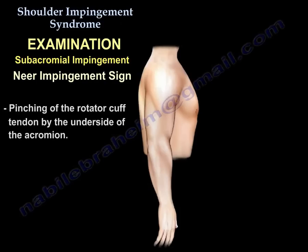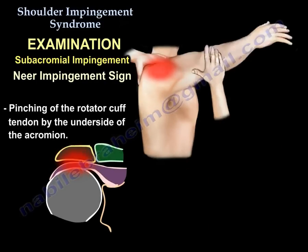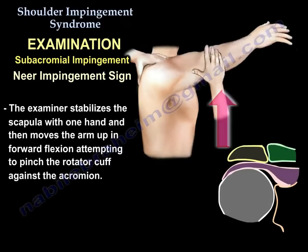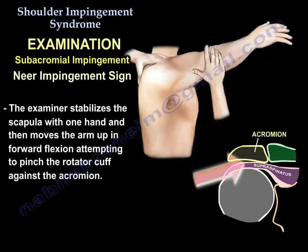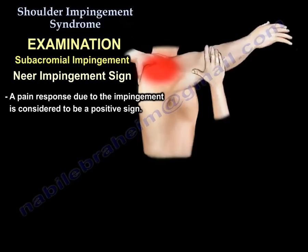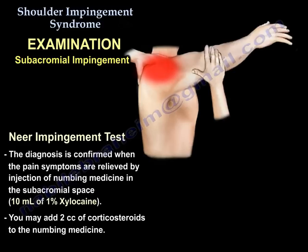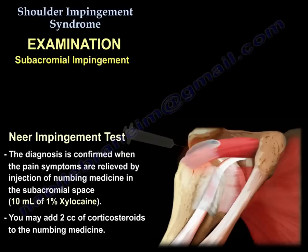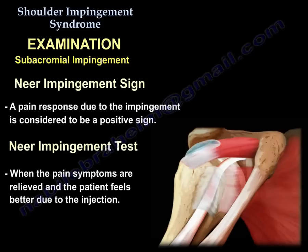The first test is the Neer impingement test. In that test, you pinch the cuff by the undersurface of the acromion. You stabilize the patient's scapula and take the arm straight in forward flexion all the way up to see if you can pinch the tendons against the acromion. When there is pain, that is a positive sign. The diagnosis is confirmed when the pain is relieved by the injection of numbing medicine — 10 ml of 1% xylocaine in the subacromial space. You may add 2 cc of corticosteroid. That is called the Neer impingement test.